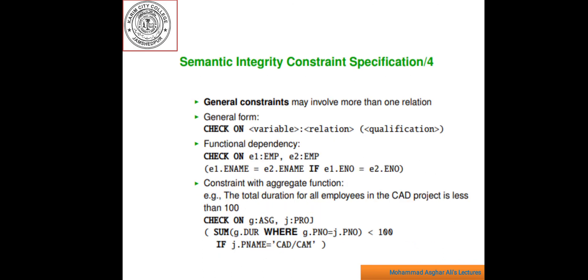The next one is general constraint. General constraints are formula of tuple relation calculus where all the variables are qualified. A general constraint may be expressed with the following syntax: Check on the list of variable name, relation name, qualifications.